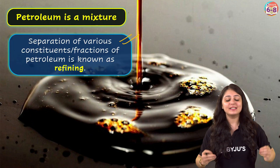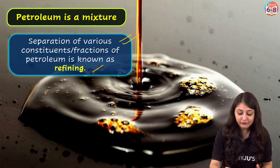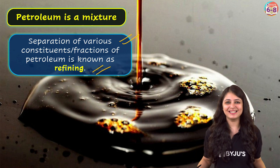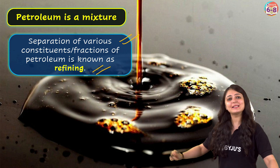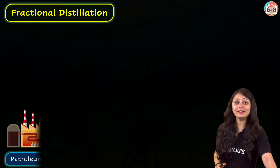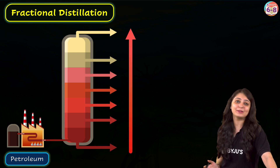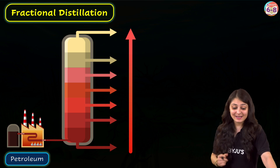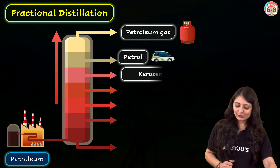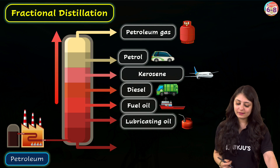So how do we achieve fractional distillation? Petroleum is a mixture which has many fractions, and refining helps us separate those fractions using fractional distillation. Crude oil is a mixture of different hydrocarbons with different boiling points. As the crude oil is heated, different components vaporize at different temperatures based on their boiling points. Components with lower boiling points condense at higher points in the column, while components with higher boiling points condense lower down.